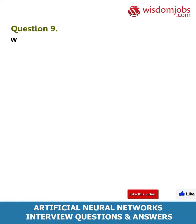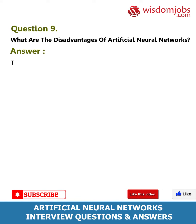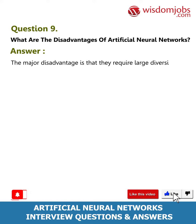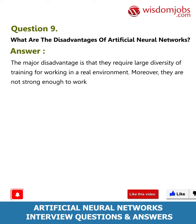Question 9: What are the disadvantages of artificial neural networks? The major disadvantage is that they require large diversity of training data to work in a real environment. Moreover, they are not robust enough to work effectively in the real world.